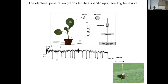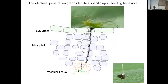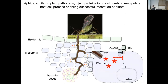We know that cells are punctured by the stylet using the electrical penetration graph. The aphid is wired and forms part of a circuit — when the aphid starts probing with the stylet, we generate a signal converted to waveforms. Each waveform corresponds to a particular feeding behavior: PD is a potential drop when the stylet punctures the cell, and E1 and E2 is when the stylet reaches the phloem and starts feeding. So the aphid punctures many epidermal and mesophyll cells. The model now is that aphids, similar to plant pathogens, inject proteins into host plants to manipulate host cell processes, enabling successful infestation.